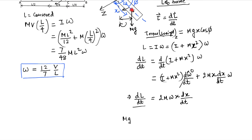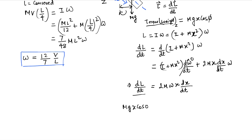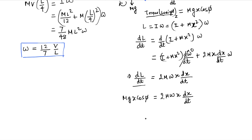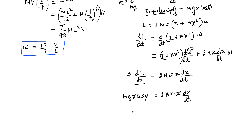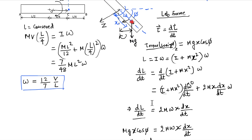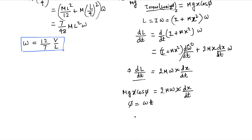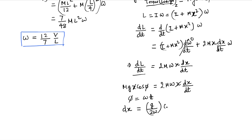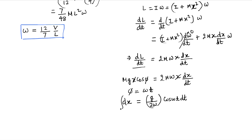Equating the torque with dL/dt: M*G*X*cos(phi) = 2*M*omega*X*(dX/dt). We can cancel X from both sides. Since phi = omega*t (because omega is constant), we get dX = (G / 2*omega) * cos(omega*t) * dt. So stick around - we will explain why omega can be constant here. That's the core point we wish to understand.